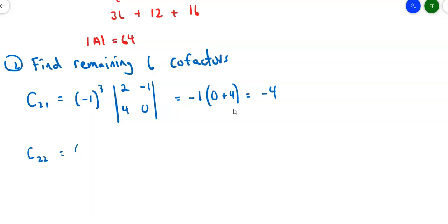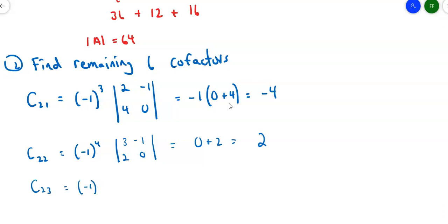C₂₂: (-1)^(2+2) = (-1)⁴ = 1. Knocking out row 2, column 2, I get [3, -1; 2, 0]. That gives me 0 minus (-2) = 2. So C₂₂ = 2. C₂₃: (-1)^(2+3) = (-1)⁵. Knocking out row 2, column 3, I'm left with [3, 2; 2, -4]. (-1) times (-12 - 4) = (-1)(-16) = +16. So C₂₃ = 16.